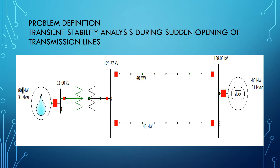In this problem it is assumed a natural gas power plant supplies power to an infinite bus through a double transmission line. The voltage at the infinite bus is 138 kilovolts and the generator generates power at 11 kilovolts. A step-up transformer is used to step up the voltage from 11 kV to 138 kV. We assume a sudden switching operation happens in one of the parallel lines at the time of five seconds, and we simulate this problem using PowerWorld Simulator to find out whether the system is stable or unstable after the switching operation.